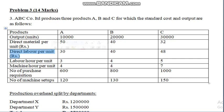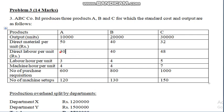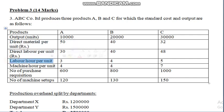Direct labor cost per unit in rupees: to produce product A the company incurred 30 rupees as labor cost, 40 rupees for B, and 48 rupees for C. Labor hours per unit: to produce product A, 3 hours are required; product B, 4 hours; and product C, 5 hours.